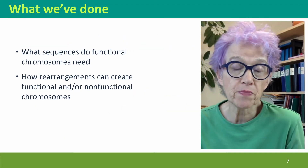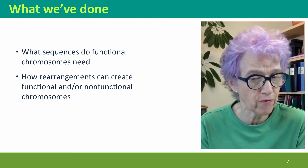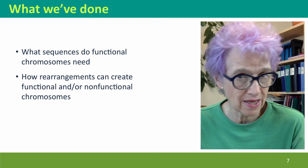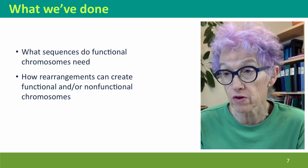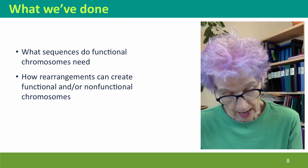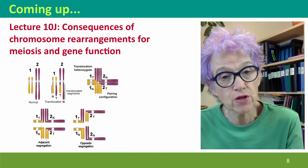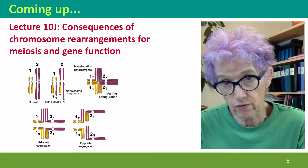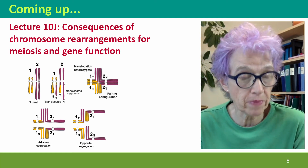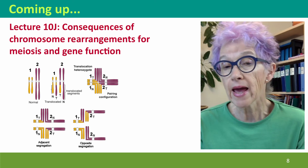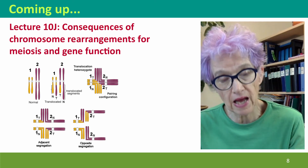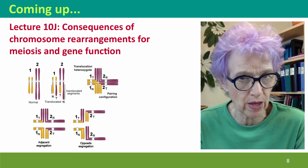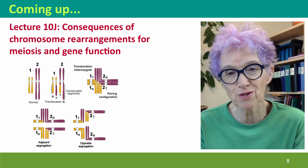We've considered what kind of sequences functional chromosomes need, and we've considered how rearrangements can create either functional or non-functional chromosomes. Coming up next, we're going to think about the consequences of these arrangements for two special kinds of function: for the ability to go through meiosis normally, and the effects on the actual function of genes that span the places where breaks and rejoining happens. I hope to see you there.